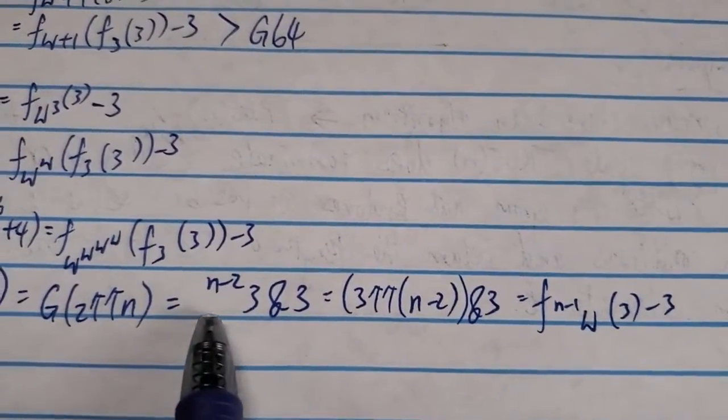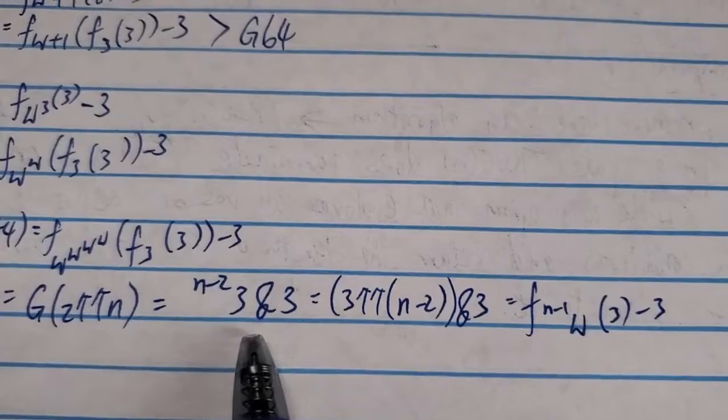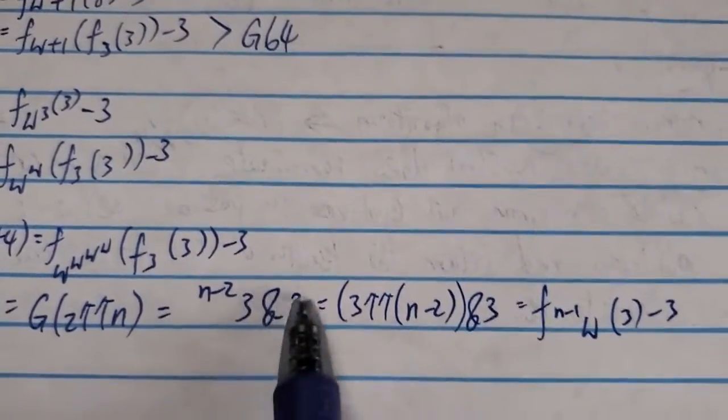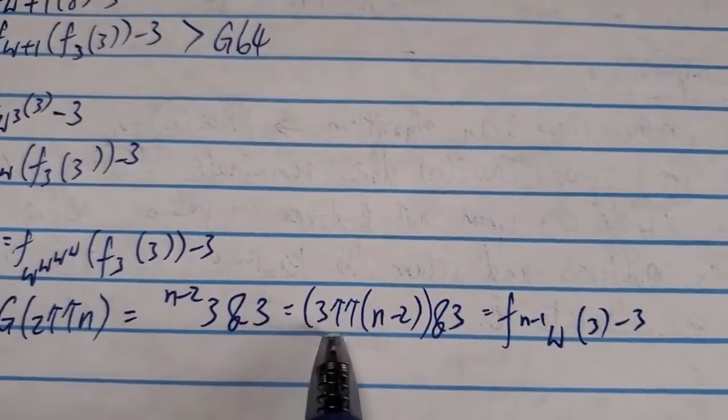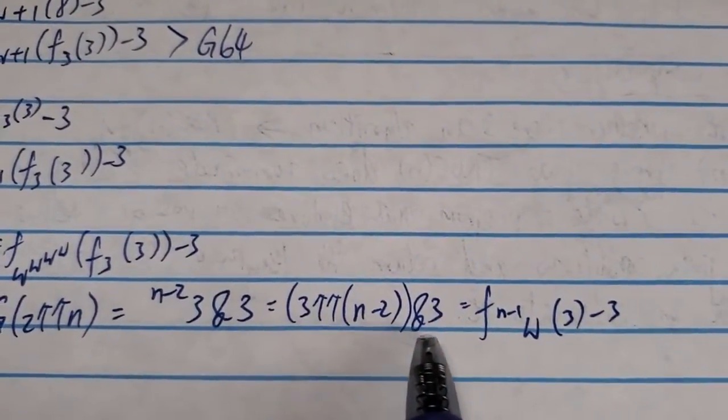And in terms of the BEEF, again, similar growth rate as the tetrational BEEF. And this is the tetrational BEEF. So this thing over here, this is tetration. So 3 double arrow of n minus 2 and 3.